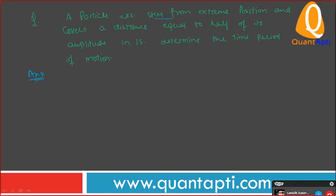This question we solved yesterday, now we're revising. Particle executes SHM from extreme position. Then the equation is A cos negative. Very good. A cos omega T. Very good.